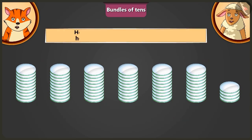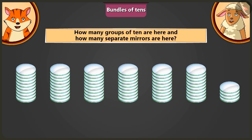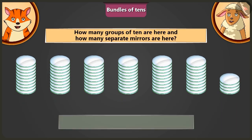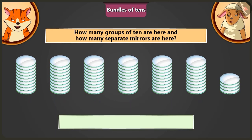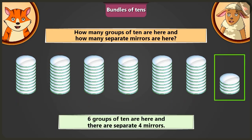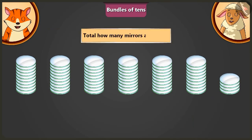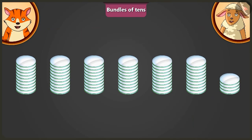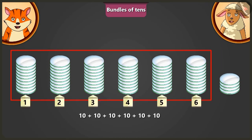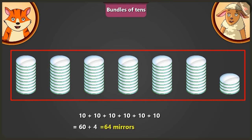Lily, how many groups of 10s are there in total and how many mirrors are there separately? There are 6 groups of 10s and 4 mirrors separately. So, how many mirrors are there in all? There are a total of 6 groups of 10, that means 60 and 4 — 64 mirrors.